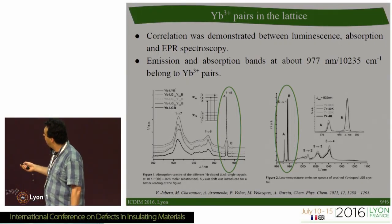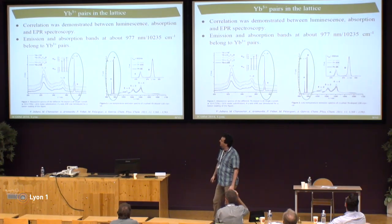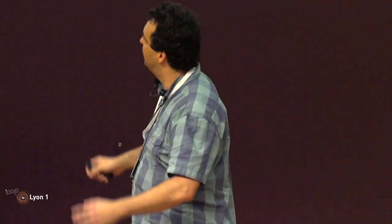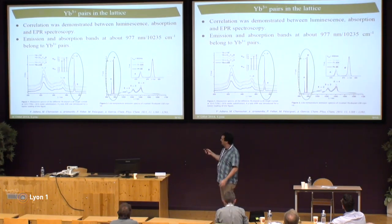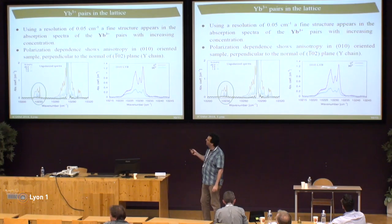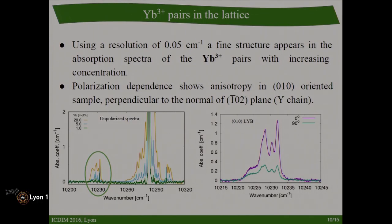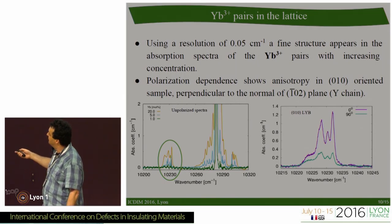I found a key article by Professor Zubera, which reports EPR, luminescence, and absorption correlation measurements, showing an absorption band at 977 nanometers corresponding to ytterbium pairs. I then looked for this absorption band in our samples using a high resolution of 0.05 reciprocal centimeters, and realized that this absorption band corresponding to ytterbium pairs has a fine structure. All older articles show only a single broad band, because they lack sufficient resolution.